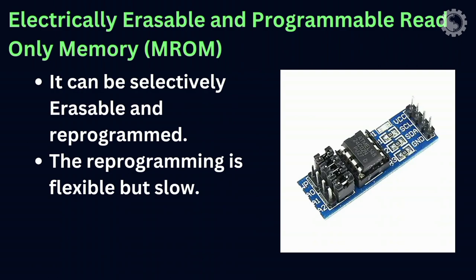The EEPROM is programmed and erased electrically. It can be erased and reprogrammed about 10,000 times. Both erasing and programming take about 4 to 10 milliseconds. In the EEPROM, any location can be selectively erased and programmed. EEPROMs can be erased one byte at a time rather than erasing the entire chip. Hence, the process of reprogramming is flexible but slow.